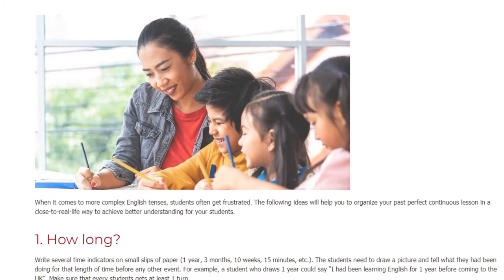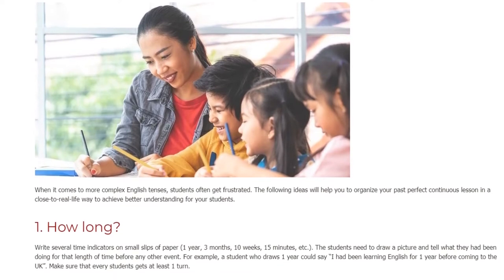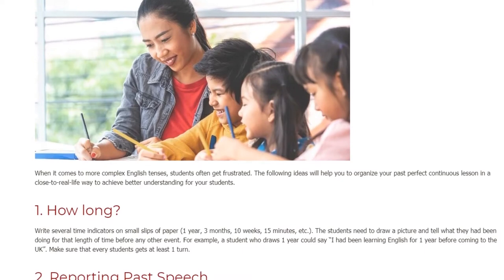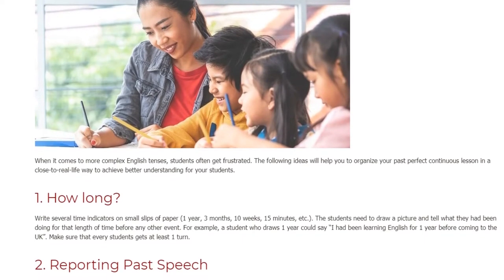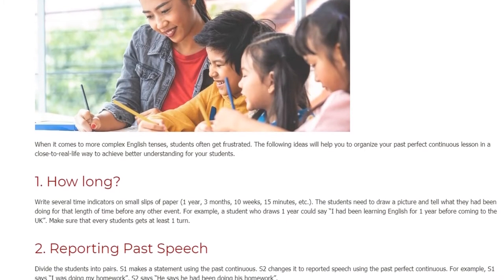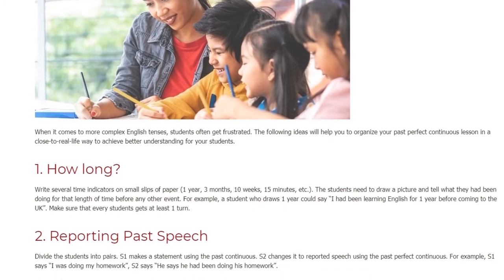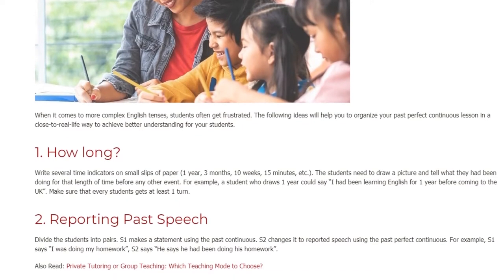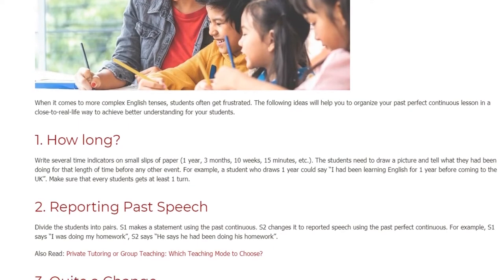Activity 1: How Long? Write several time indicators on small slips of paper — one year, three months, 10 weeks, 15 minutes, etc. The students need to draw a picture and tell what they had been doing for that length of time before any other event. For example, a student who draws 'one year' could say: I had been learning English for one year before coming to the UK. Make sure that every student gets at least one turn.